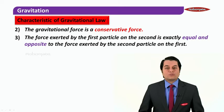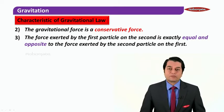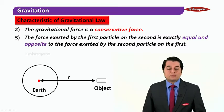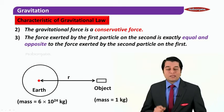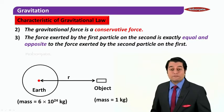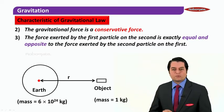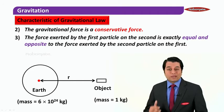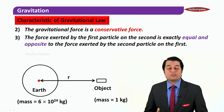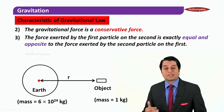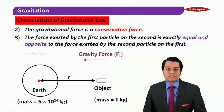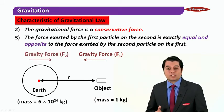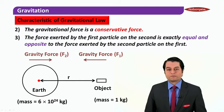To illustrate this, consider the Earth and an object separated by distance R. The mass of the Earth is 6 × 10²⁴ kg and the object has a mass of 1 kg. According to the gravitational law there is a force of attraction between the two masses. Let F1 be the gravitational force experienced by the object due to the Earth, and F2 be the gravitational force experienced by the Earth due to the object.